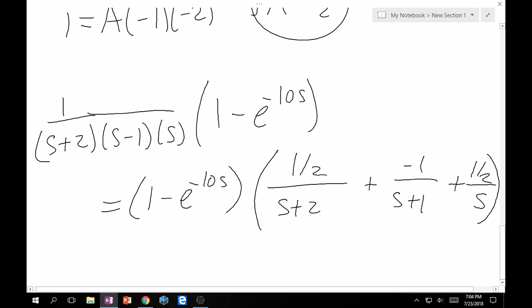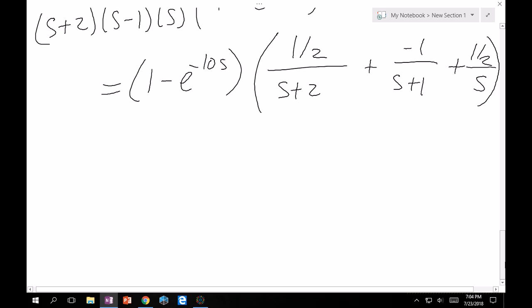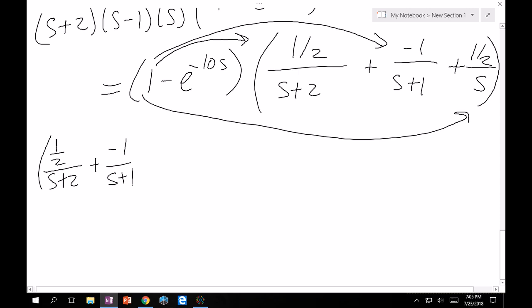Now this can be broken up so that you can take the Laplace of it a lot easier. Let's focus on when this number 1 is multiplied onto these terms. That seems fair. What that is going to yield is 1/2 over (s+2) plus -1 over (s+1) plus 1/2 over s. And then I won't forget about the other part. The e^(-10s) contribution is going to be the exact same thing: -e^(-10s) times [1/2/(s+2) - 1/(s+1) + 1/2/s].